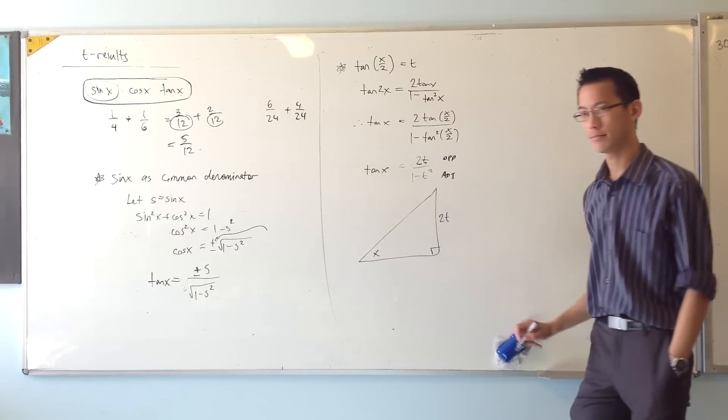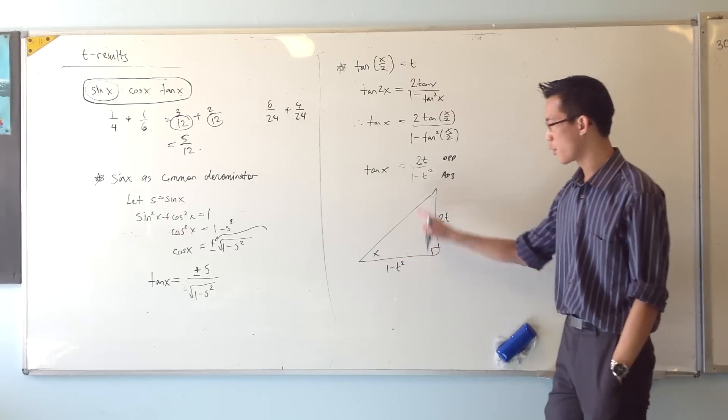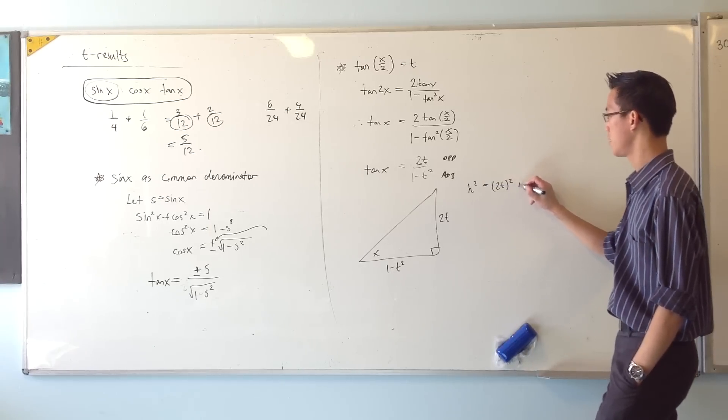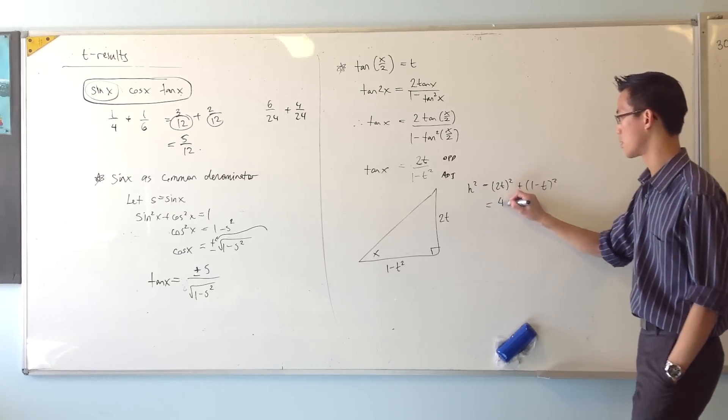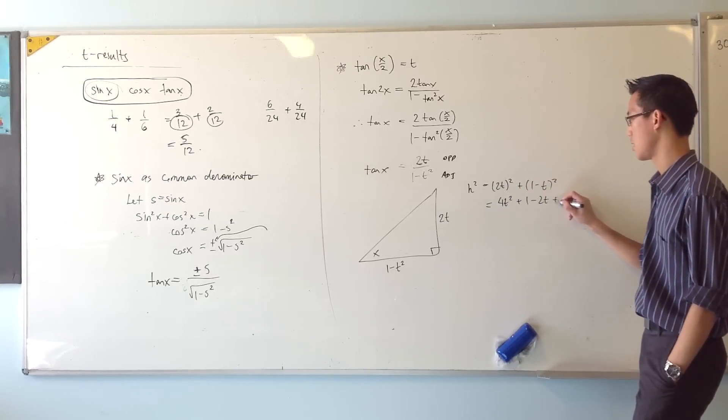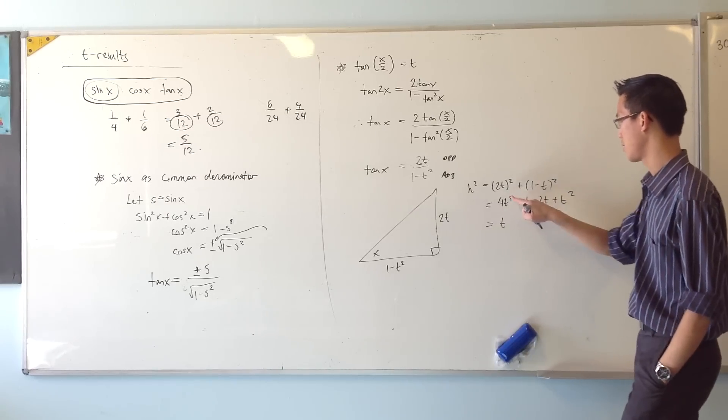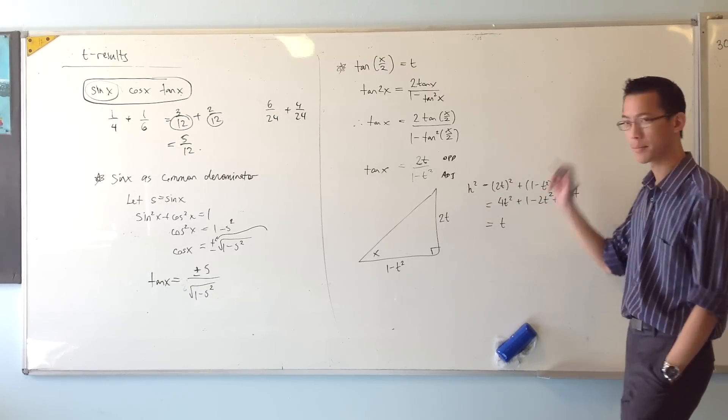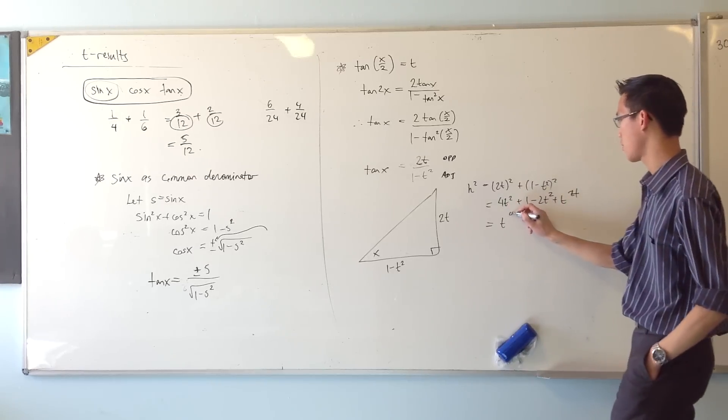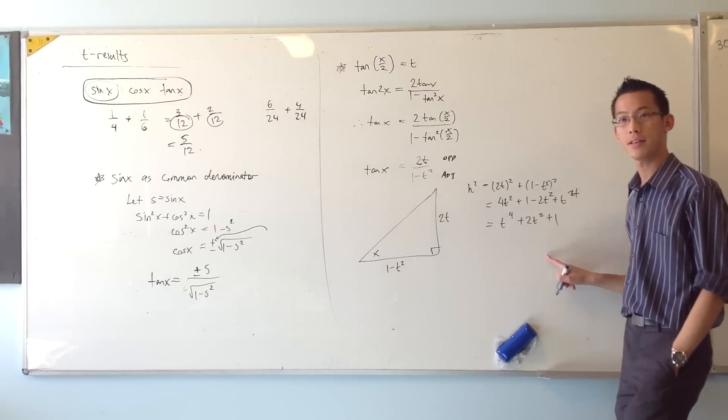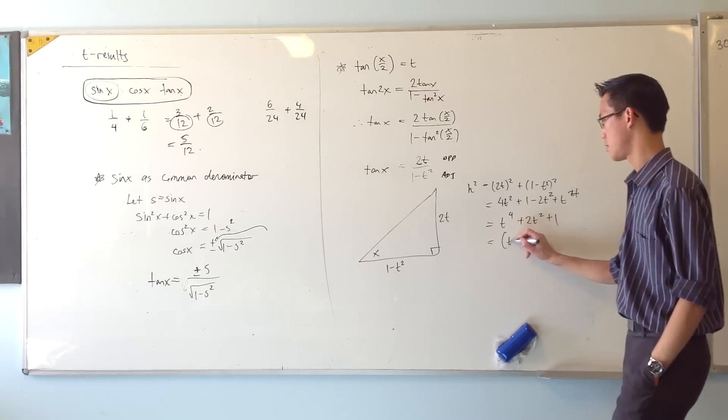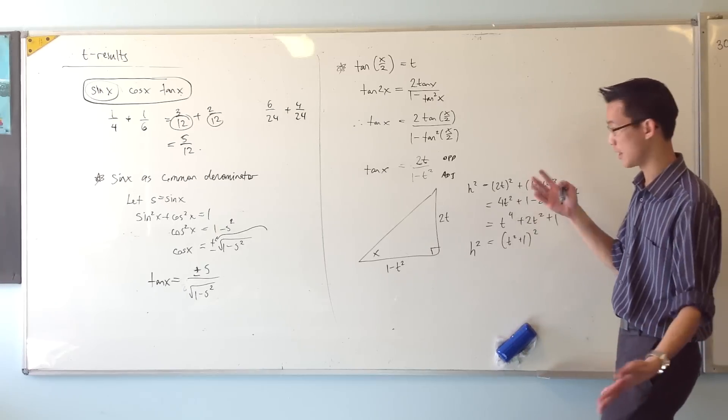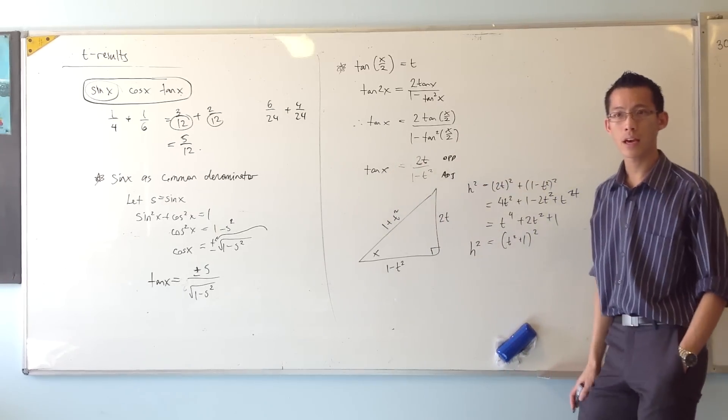The opposite side will be here and the adjacent side will be here. Now, if we want to work out what this hypotenuse is, I just use Pythagoras. So it's the sum of the other two squared. So this will be 4t squared. This will be 1 minus 2t squared plus t to the 4. Sorry, wait. That should be a 4 and that should be a squared. So now you can see these t squareds, they mix together. So I'm going to get t to the 4 plus 2t squared plus 1. And this is a perfect square - t squared plus 1 all squared. So if that's the square of the hypotenuse, then I just take the square root to get t squared plus 1. Does that make sense?